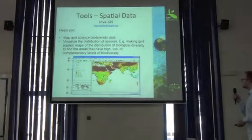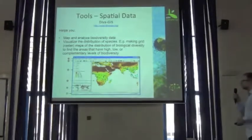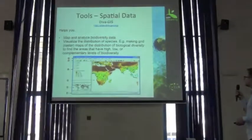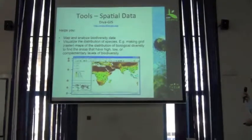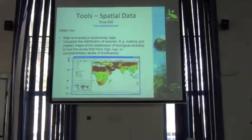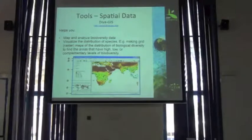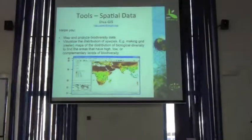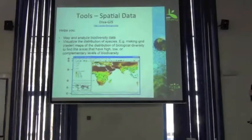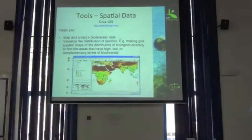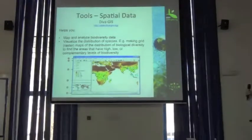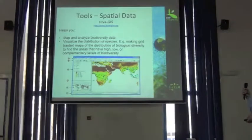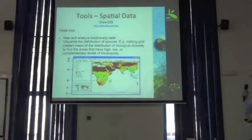Georeferencing Calculator — you all know what that does. Diva GIS is another free tool, quite powerful, to help you map and analyze biodiversity data, visualize the distribution of species, make grid maps of the distribution of biological diversity, and ultimately find out whether or not there are areas with high, low, or complementary levels.